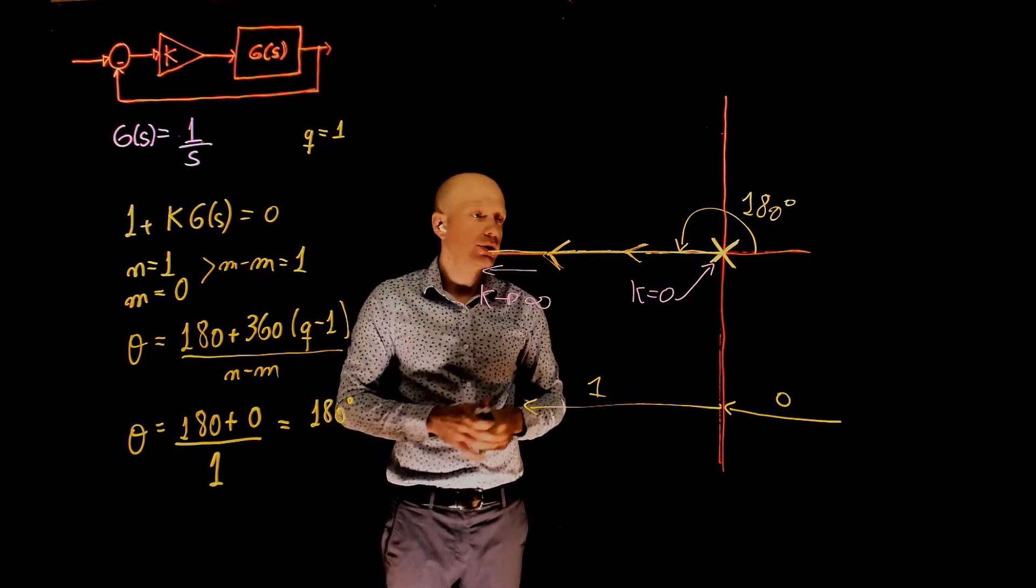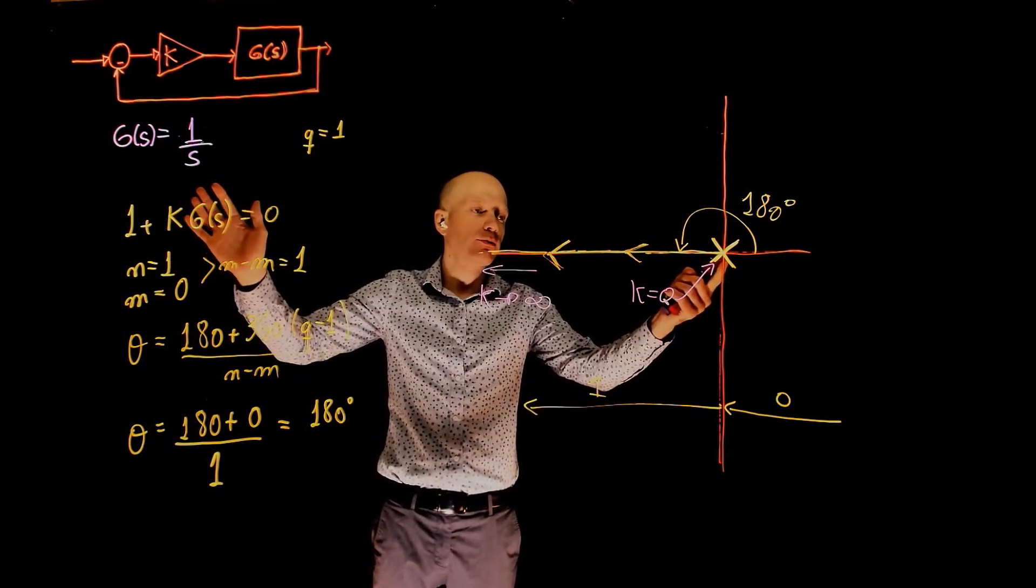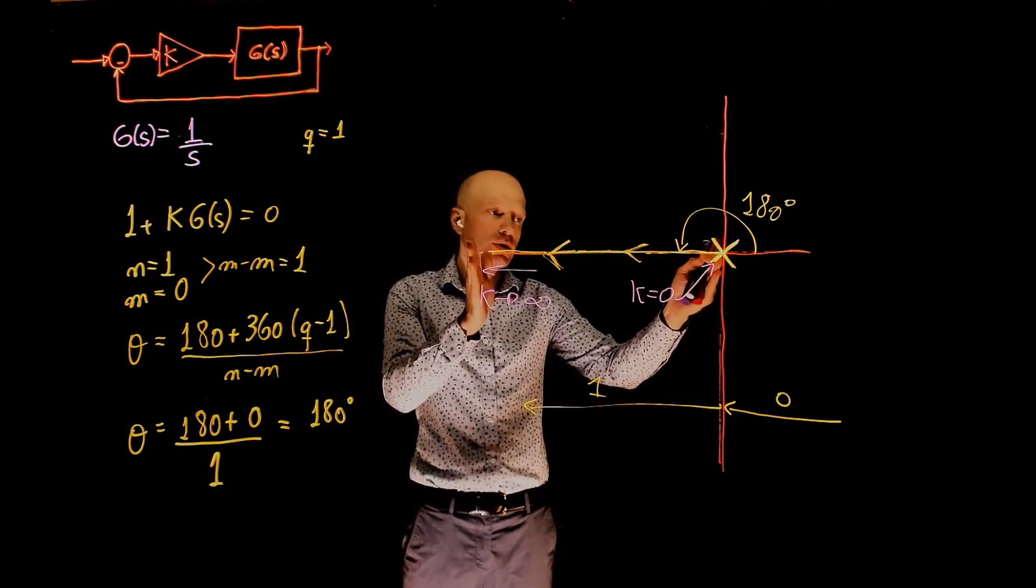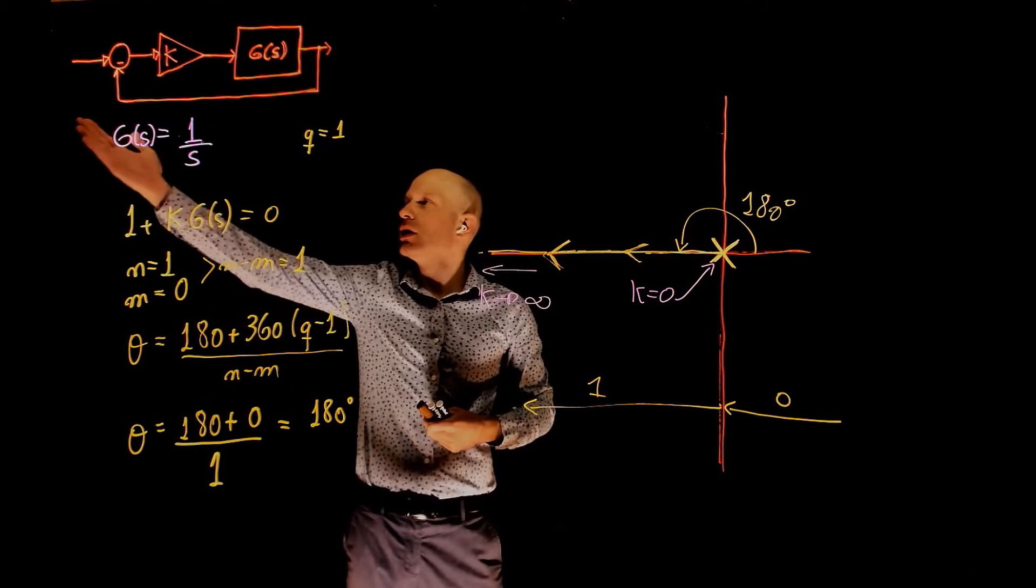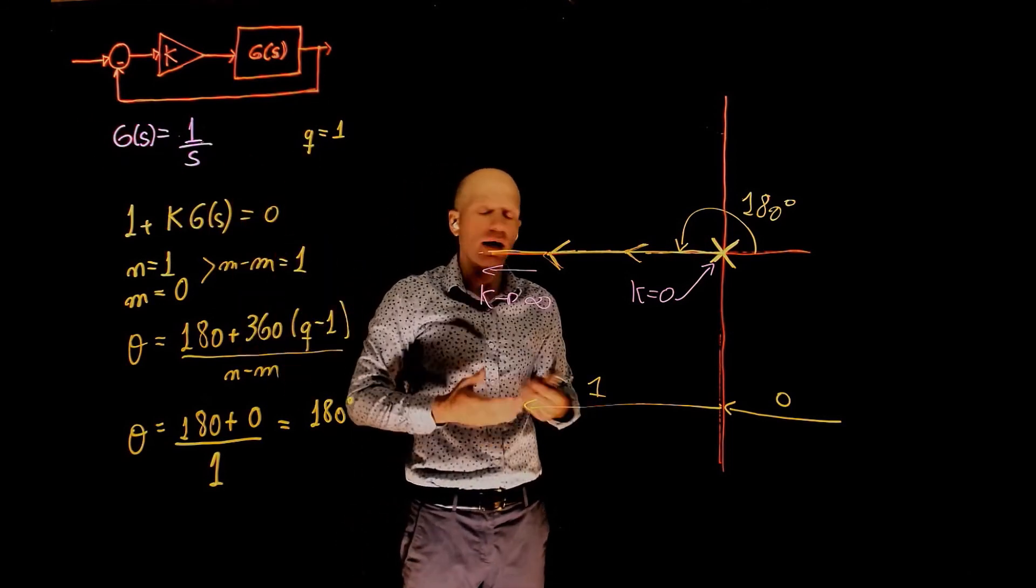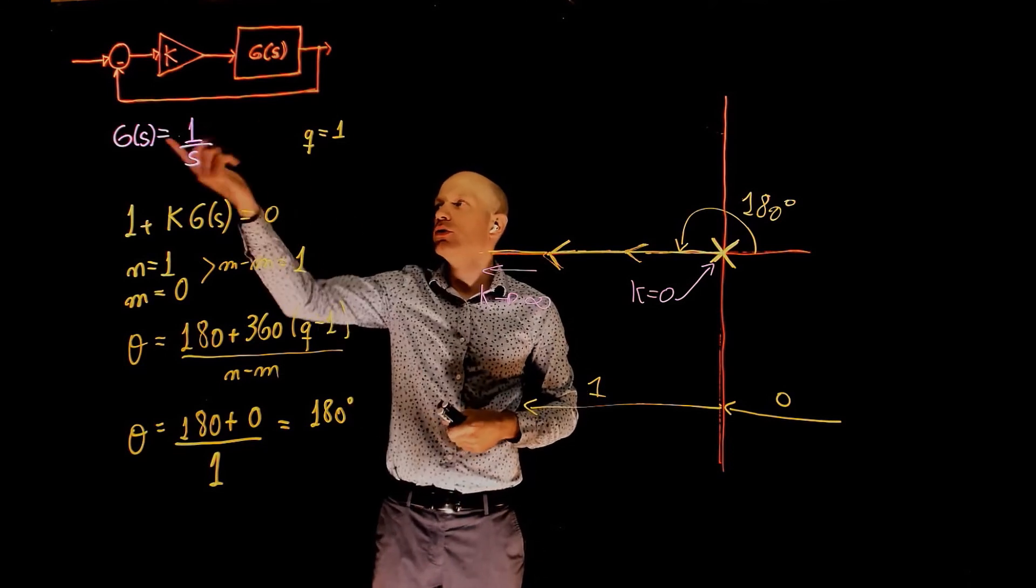Again, we started the analysis with the open-loop transfer function. This is the pole of the open-loop transfer function, but the root locus here represents the poles of the closed-loop transfer function, that is, the output divided by the input. That can be derived if you know the open-loop transfer function if you have a unit feedback loop.